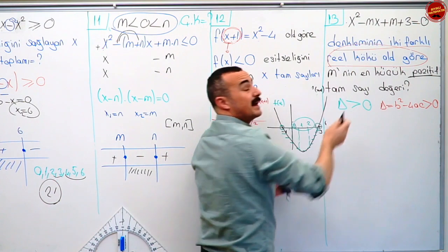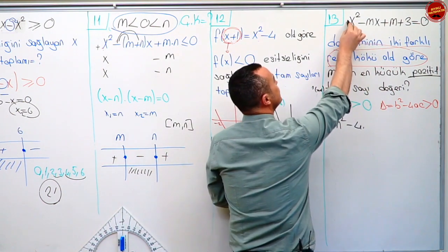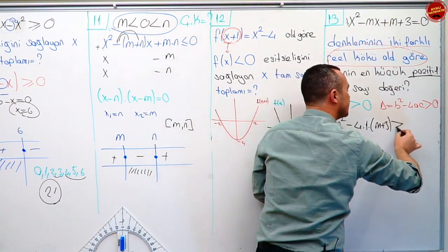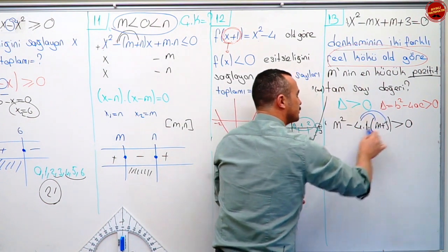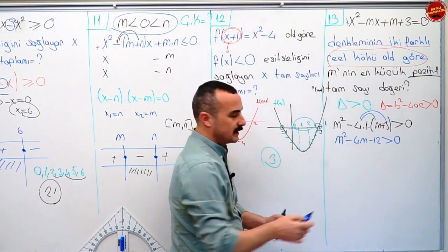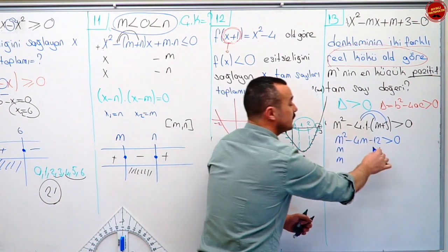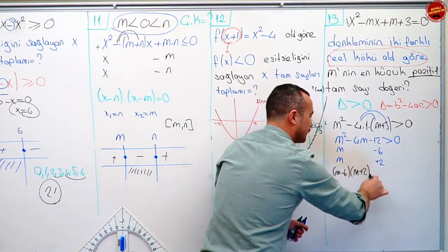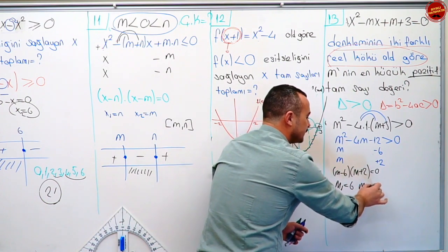O zaman söylenen şartın sağlanabilmesi için b kare eksi dört a c'nin sıfırdan büyük olması gerekecek. Hadi hesaplayalım deltayı. b kare: b dediğimiz eksi m, eksi m'nin karesi m kare. Eksi dört a dediğimiz bir, c dediğimiz m artı üç. Bunun sıfırdan büyük olması gerekiyor. Şuradaki dördü içeri dağıtacağım. m kare eksi dört m eksi on iki büyükmüş sıfırdan. Çarpandan ayıralım: m eksi altı çarpı m artı iki. Köklerim: birincisi altı, ikincisi eksi iki.